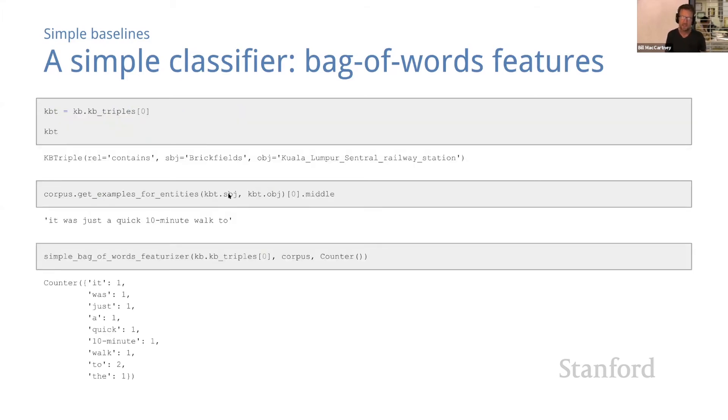Let's get a sense of what this looks like in action. First, let's print out the very first KB triple in our KB. We actually looked at this last time. It's a KB triple that says that the contains relation holds between Brickfields and Kuala Lumpur Central Railway Station. Now let's look up the first example containing these two entities. I'm just going to look them up in the forward direction—subject and object. I get all the examples, I look at the first one, and let me just print out the middle. The middle says 'it was just a quick 10 minute walk to.'